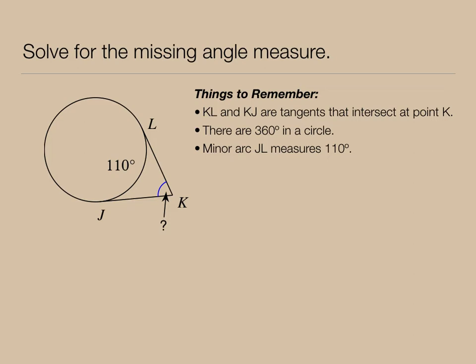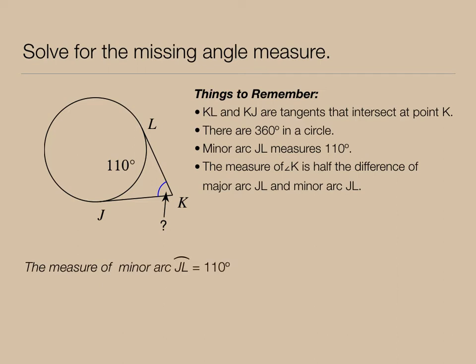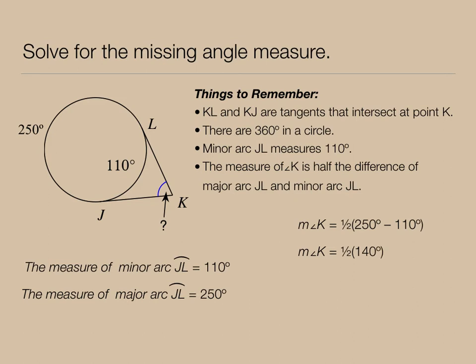We're going to use the relationship that the measure of angle K is half the difference of major arc JL and minor arc JL. So we'll start with what was given. The minor arc measure is 110 degrees. Therefore, the major arc must be 360 minus 110, or 250 degrees. Now the measure of angle K is half the difference of the larger arc minus the smaller arc. We'll just apply order of operations, and we get the measure of angle K is 70 degrees.